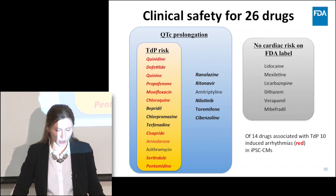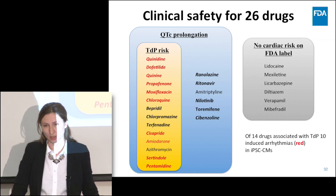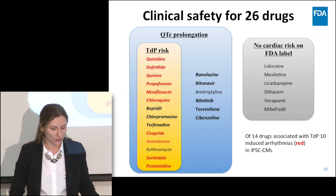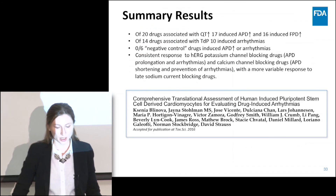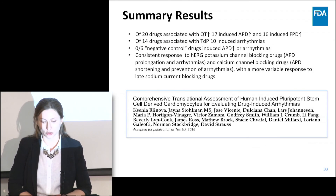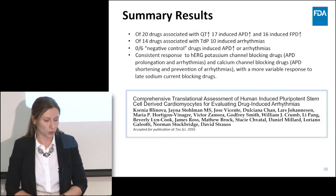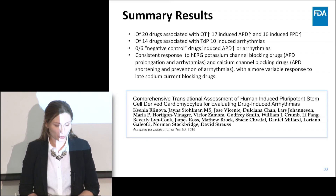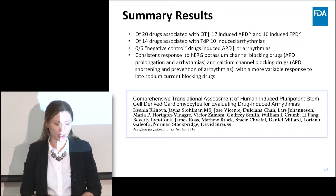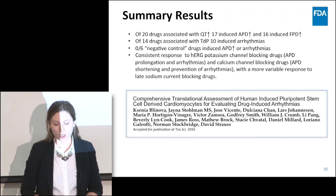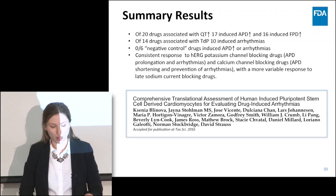Out of 14 drugs associated with TdP, 10 induced arrhythmias in iPSC cardiomyocytes. None of the six negative control drugs induced action potential prolongation or arrhythmias in stem cells. Overall, consistent responses to HERG potassium channel blocking drugs — APD prolongation and arrhythmias — were observed, as well as to calcium channel blocking drugs — APD shortening and prevention of arrhythmias. We got more variable response to late sodium current blocking drugs.